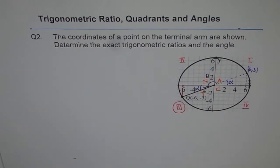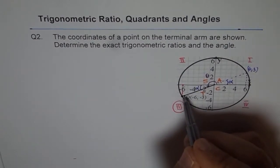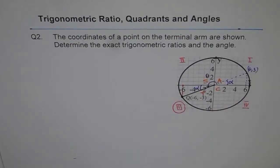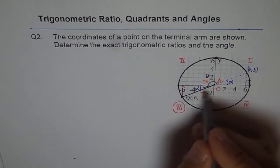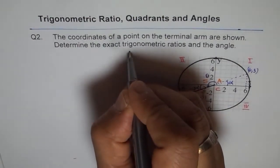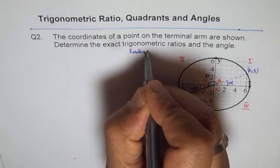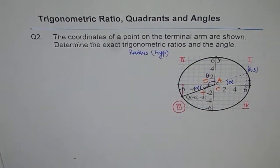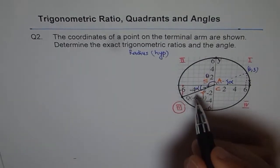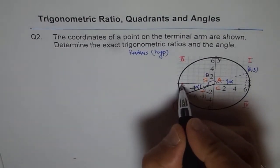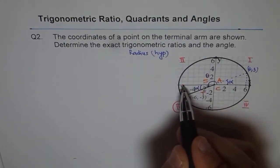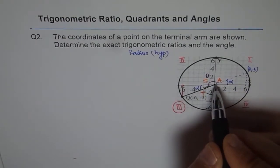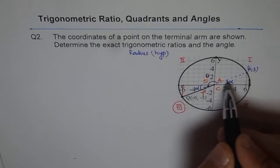So two things to start with. One, we need to find the radius of the arm. Second, we need to find related acute angle. So let's start one by one. Let's find the radius, or the hypotenuse. Let's say radius, which is the hypotenuse of our triangle. So for that, we will use Pythagorean theorem. This is the right angle triangle. So we know x square plus y square is equal to r square.